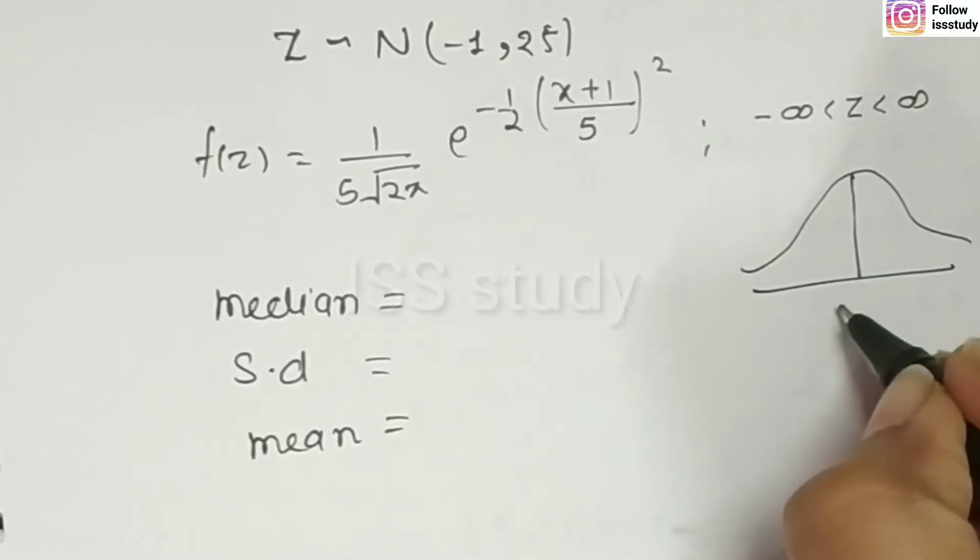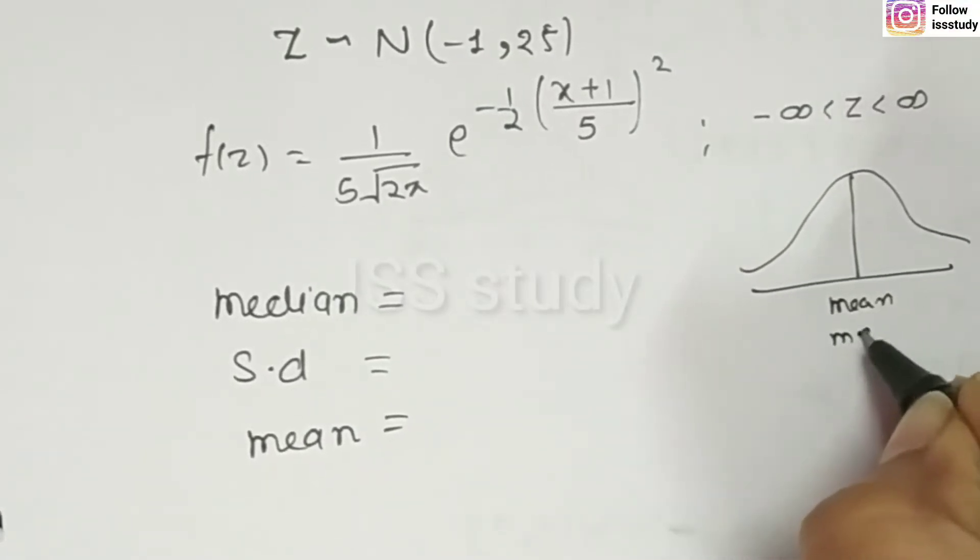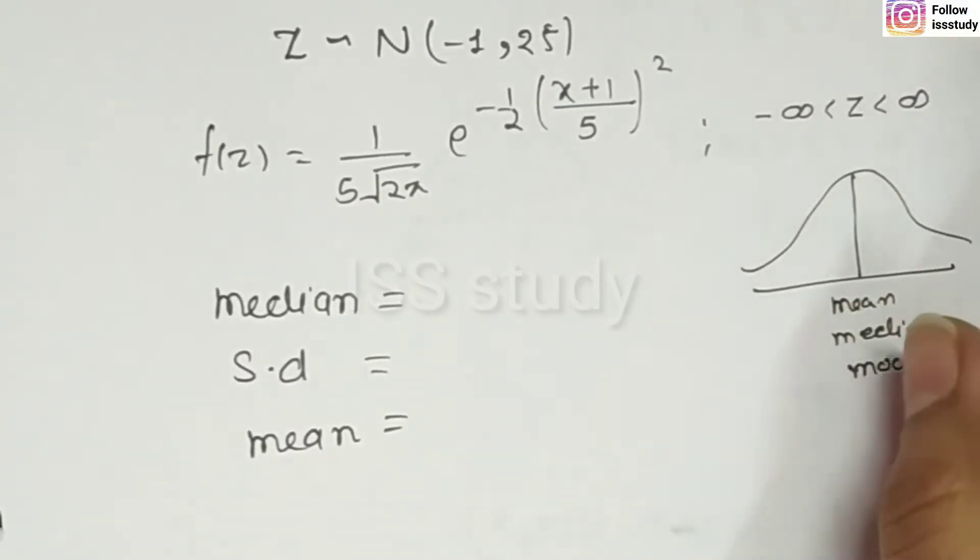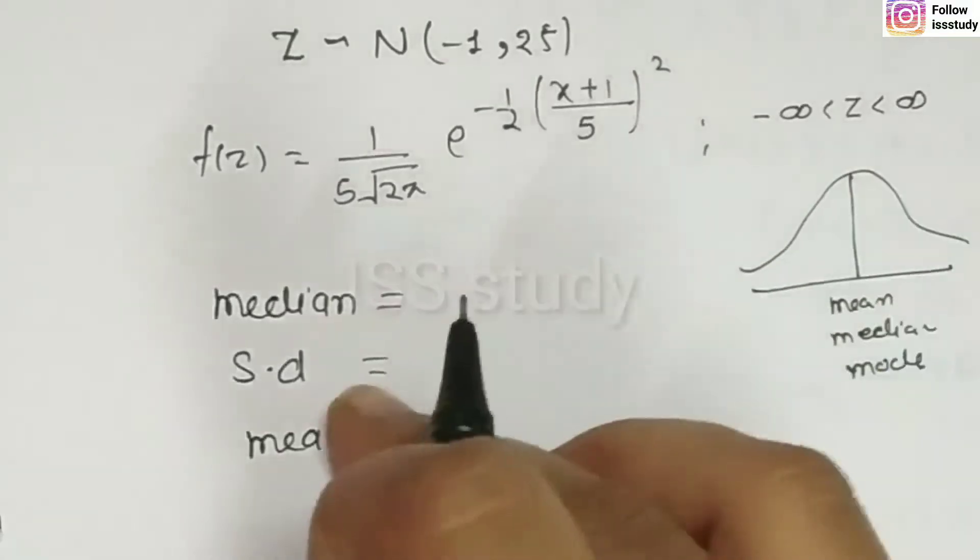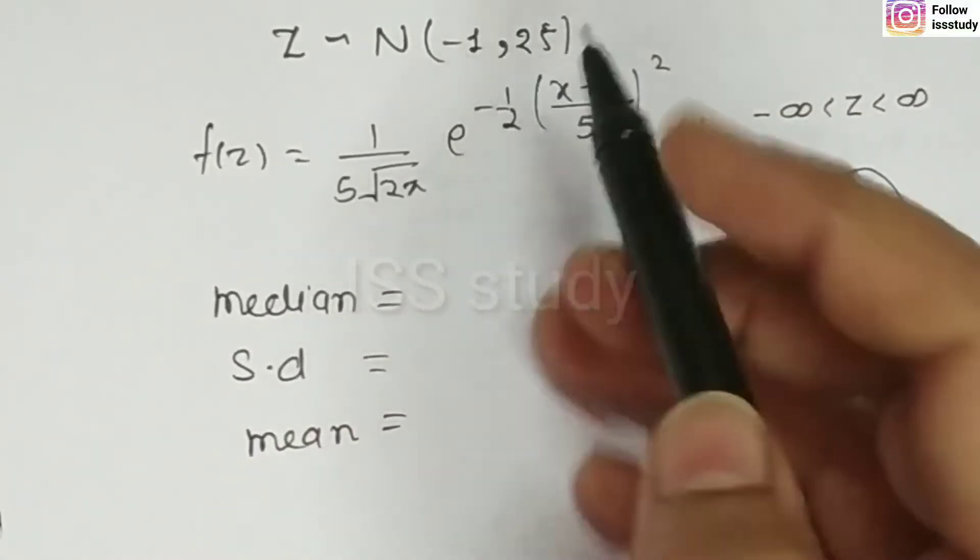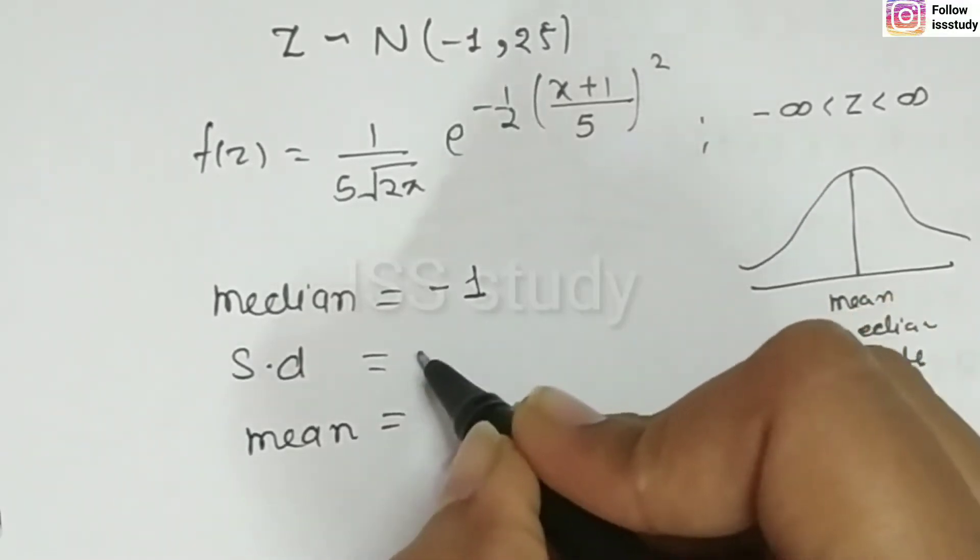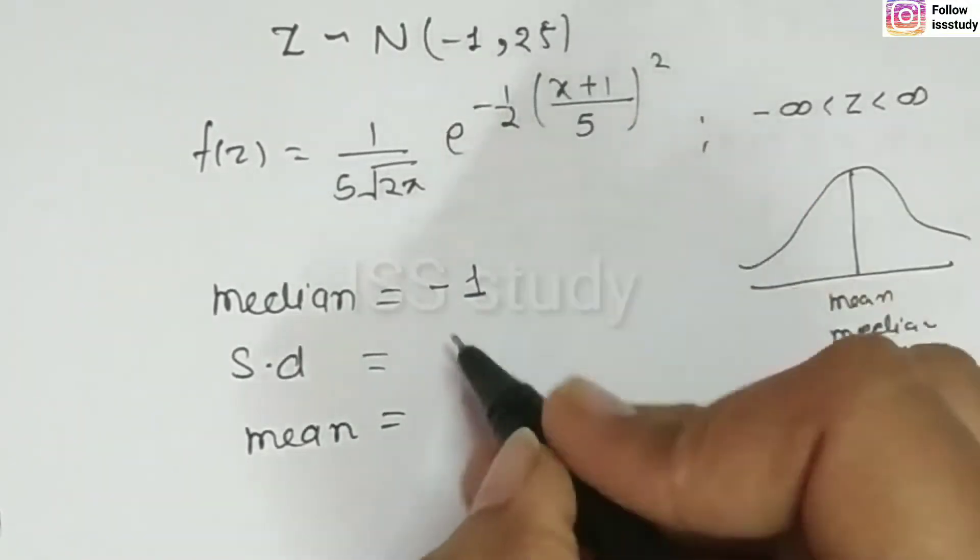So, symmetric distribution means, the mean, the median, and the mode, the three are equal. This condition, this property, you should remember. So, here, how much the mean is? Minus 1. So, what does median mean? Minus 1.